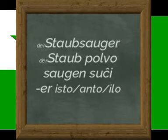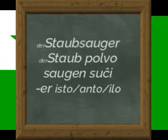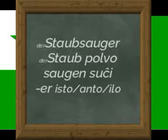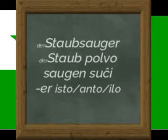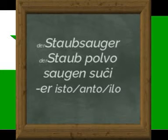Staubsauger — polvsucilo. Staubs — polvo. And sucilo is the sauger. The -er suffix has a sign that is similar to -ilo, -anto, and -isto.